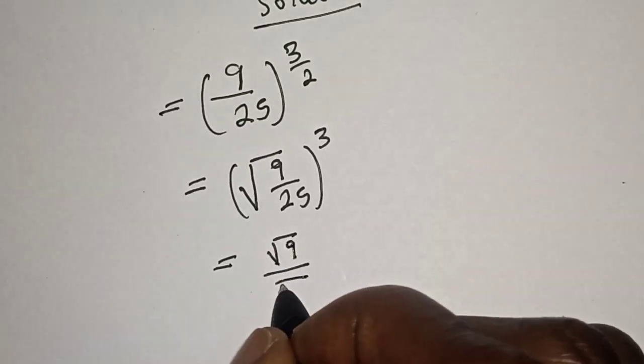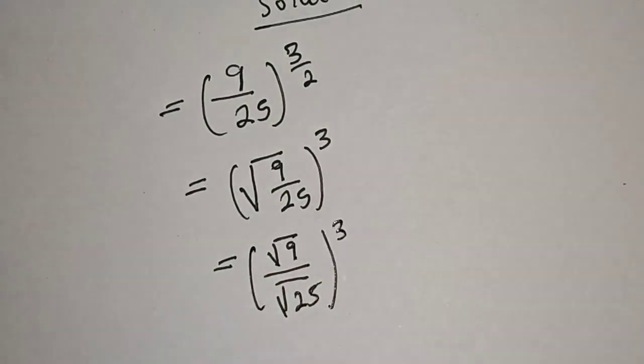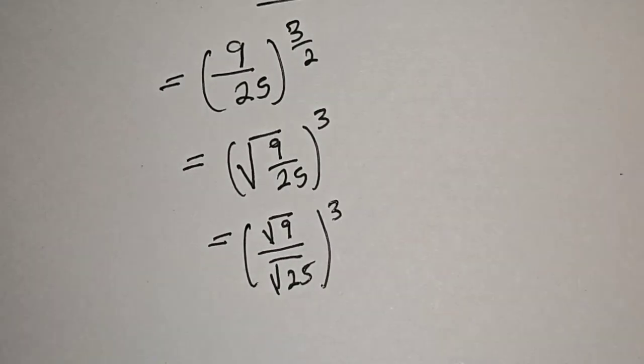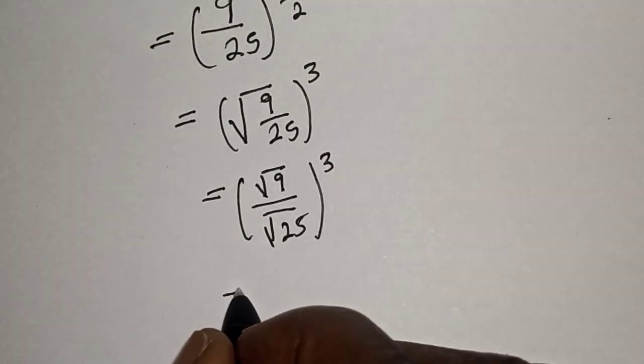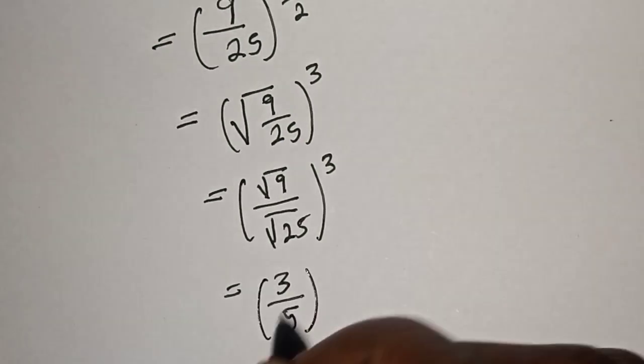This equals square root of 9 over square root of 25, all raised to power 3. Square root of 9 is 3, square root of 25 is 5, all raised to power 3.